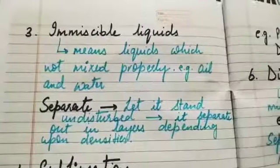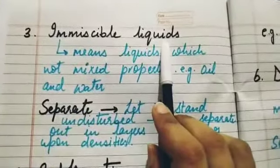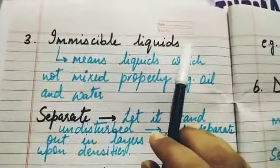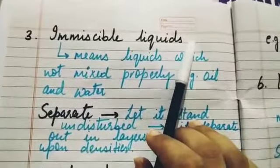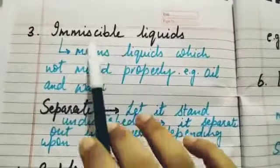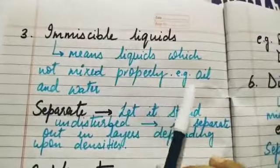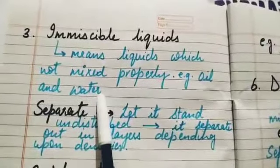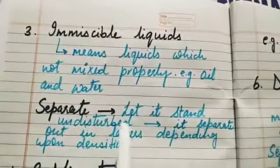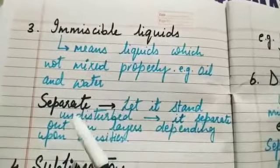When two immiscible liquids are present in a mixture, how are they separated? First, we should know what immiscible liquid means — immiscible liquids are those which do not mix properly. For example, when we mix oil in water, the oil droplets remain floating on the water. These are immiscible liquids.